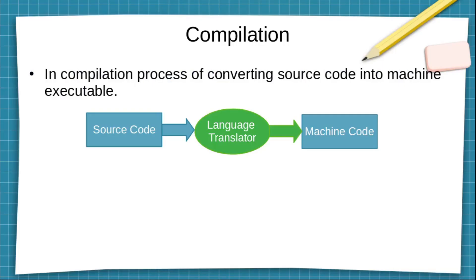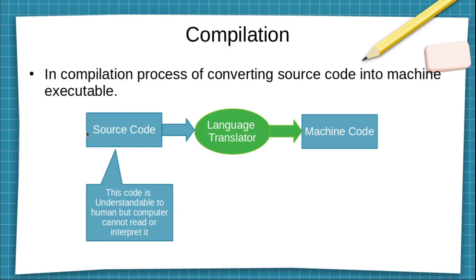Before starting the lecture, let's discuss what compilation means. In the compilation process, we are going to convert the source code into another code called machine code. A source code is a code that is understandable to humans, and usually we write this code in any text editor.